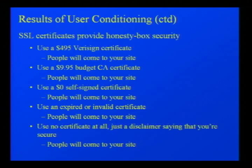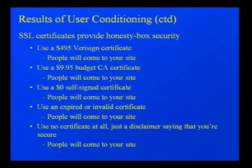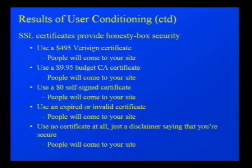Certificates basically had zero effect on people visiting a website — pretty much indistinguishable from placebo. Users dismiss error messages and have very little protection against man-in-the-middle attacks. There's a payment mechanism called an honesty box: you trust that most people are honest and will drop in the correct amount. That's pretty much the same security as what SSL certificates get you. You spend $500 on a VeriSign certificate and people visit; you use a $9.95 budget CA certificate, people still come; you use a self-signed certificate or an invalid one — they'll still come in.